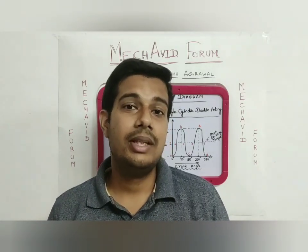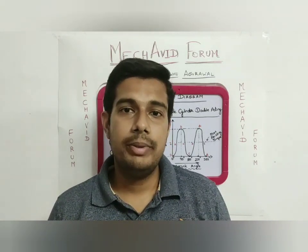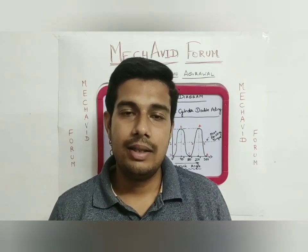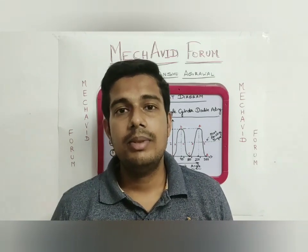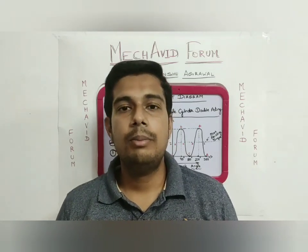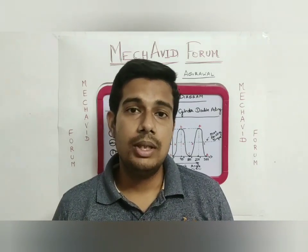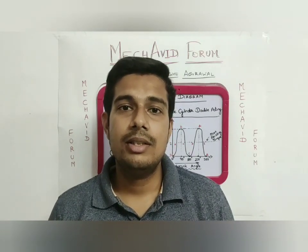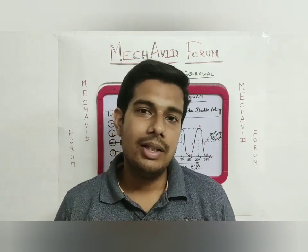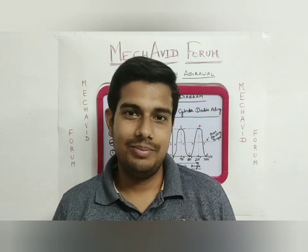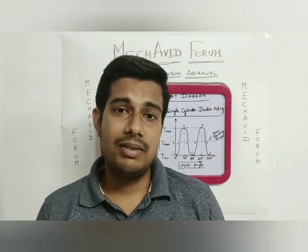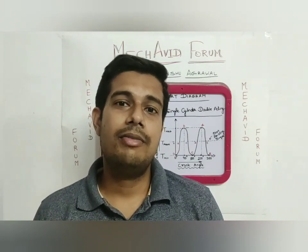Before proceeding, we should know what a crank effort diagram is. It is a diagram drawn between two axes X and Y, that is between crank angle and the turning movement. This diagram basically tells us about the development of torque at different positions of the crank. The importance of this is that we should know how much torque an engine can develop at its different positions, so that we can design and place the engine accordingly into the required vehicle. This diagram also helps us to improvise the design and achieve the best design to develop maximum torque at different positions of the crank.